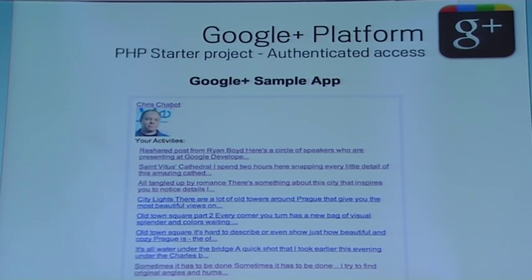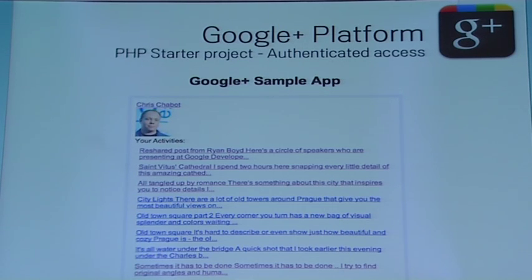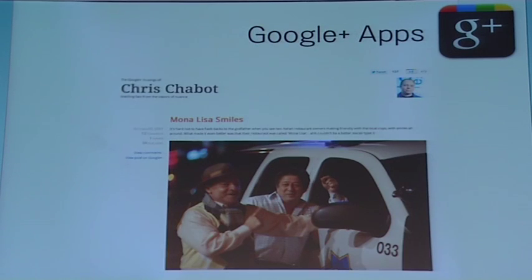Once authenticated, you can call things like plus.people.get with 'me' as the user. Because you're authenticated, the system knows which user just authenticated, so 'me' will resolve to Chris Chabot or whoever is going through the flow. The result shows the headlines of my most recent posts on Google+, and I made them linked so you can click through to Google+. The key takeaway is it's really easy to get started. If you're feeling inclined to start playing with this, do it — you'll have a lot of fun.